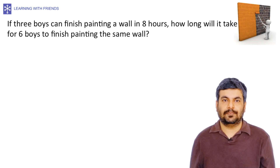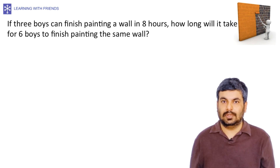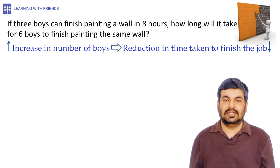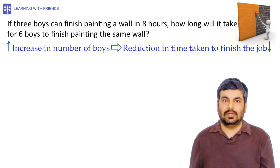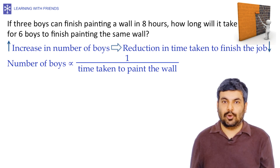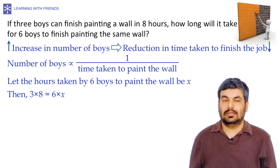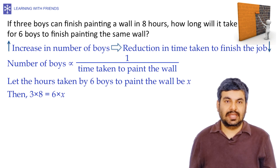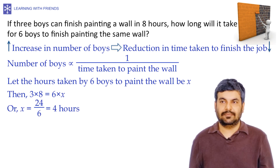Inverse proportion word problem: If 3 boys can finish painting a wall in 8 hours, how long will it take 6 boys to paint the same wall? Increasing the number of boys reduces the time — this is an inverse relationship. Let x be the hours taken by 6 boys. Since the quantum of work is the same, 3 × 8 = 6 × x, so x = 24/6 = 4 hours.